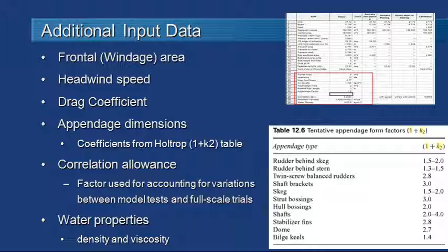There are a couple of extra things we may want to consider when it comes to resistance. We may want to consider aerodynamic resistance, and to do that we can enter in a frontal or windage area — that's just the cross-sectional area of the vessel above the waterline as seen from the front. If we want to take into account any headwind speed, we can add that in, and hull speed will adjust for the relative speed of the vessel automatically. We should enter in a drag coefficient to account for the shape of the vessel above the waterline. A box-shaped superstructure would be a drag coefficient of about 1, a nice streamlined superstructure perhaps 0.8, and a superstructure with a lot of drag perhaps 1.1 or 1.2.